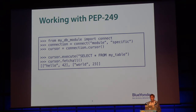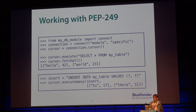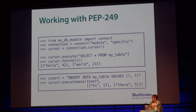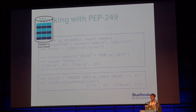If you want to send data to the database, PEP 249 has the execute_many function. You pass in a query and a list of parameters — an iterable of parameters — where each element represents an individual parameter set. So that's how you use databases with Python in theory.